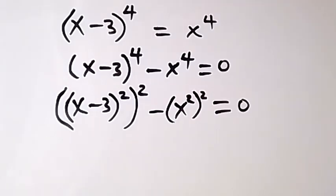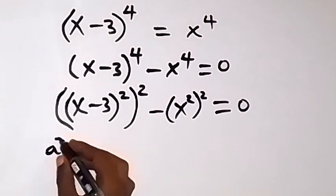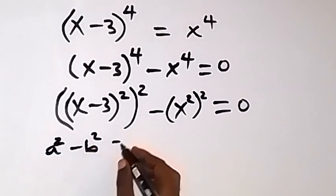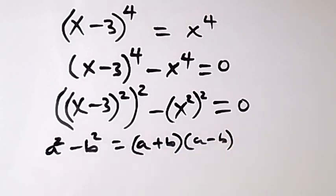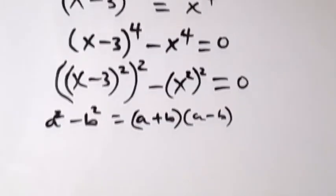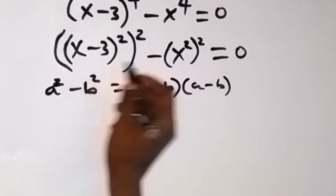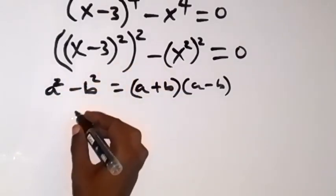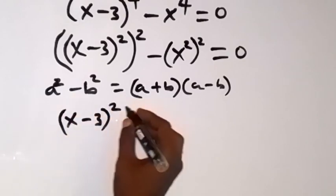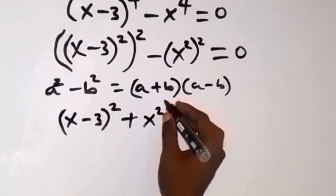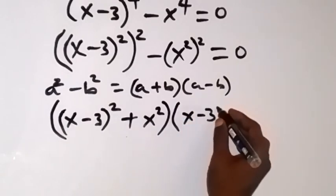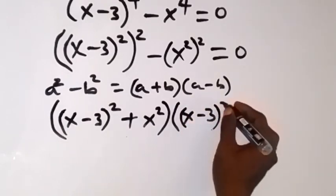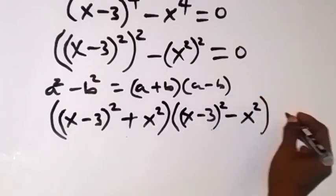This will also give us back x raised to the power 4. There is an identity we need to use here: the difference of two squares. When we have a squared minus b squared, this gives us a plus b times a minus b. Applying that here, treating the first term as a, we get x minus 3 squared plus x squared, times x minus 3 squared minus x squared, equals 0.